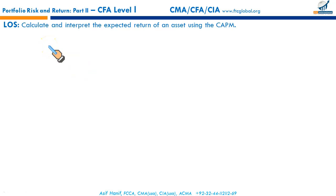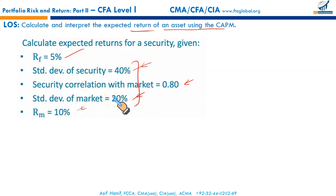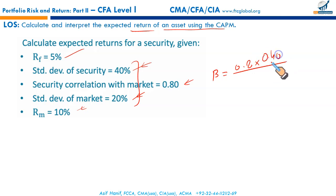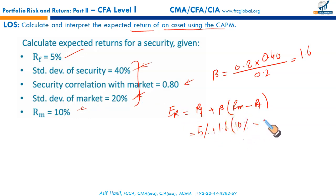The next LOS says: calculate and interpret the expected return of an asset using CAPM. Given a risk-free rate of 5%, security standard deviation of 40%, market correlation of 0.8, market standard deviation of 20%, and RM of 10%, first calculate beta: 0.8 times 0.4 divided by 0.2 equals 1.6. Then apply CAPM: expected return equals 5% plus 1.6 times (10% minus 5%) equals 13%. The computation is fairly straightforward.